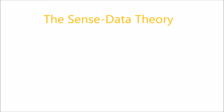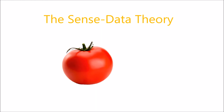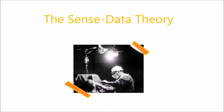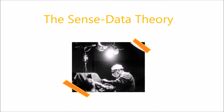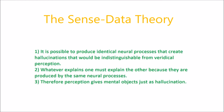The following four theories rethink perception. The concept of sense data was conceived as a neutral concept to distinguish between what is given in an experience and what can be doubted. When someone sees a tomato, they can doubt what they are seeing is a tomato and that what they are seeing is a material object, but they cannot doubt that what they are seeing is a red-colored circular bulging shape. Sense data theorists say that we are only aware of sense data, and that sense data can only be mental objects, according to the argument from hallucination. The argument from hallucination states that it is possible to produce identical neural processes that create hallucinations indistinguishable from veridical perception. Whatever explains one must explain the other, because they are produced by the same neural processes — therefore perception gives mental objects just as hallucination does.